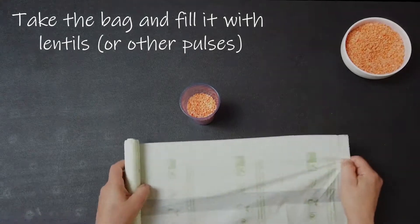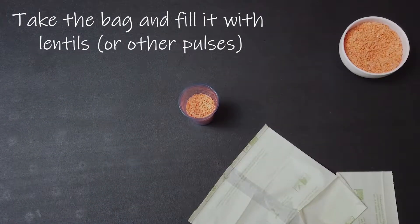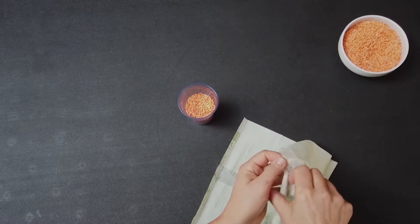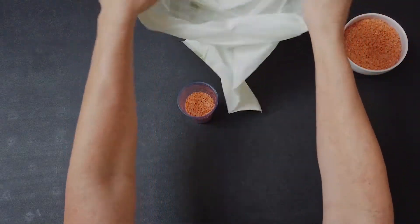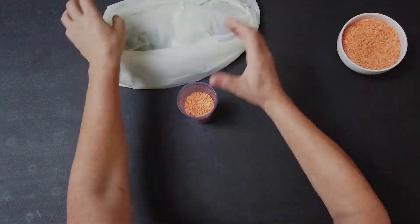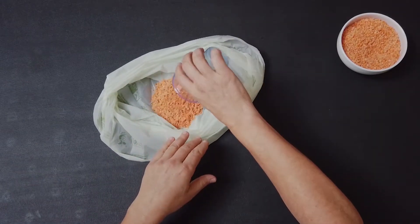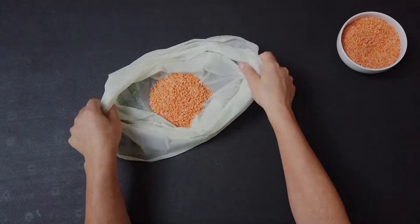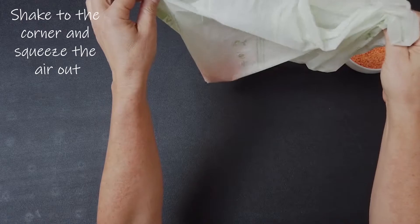Once you've got your lentils weighed out, you're going to take a plastic bag. We're using a biodegradable food waste bag here, but nappy bags or dog waste bags are fine. Put it inside and then you're going to shake it to the corner.